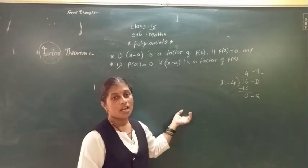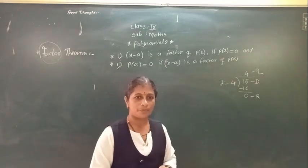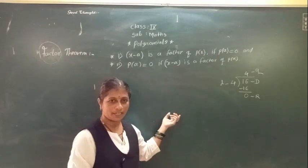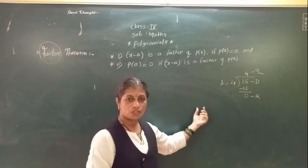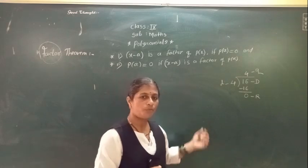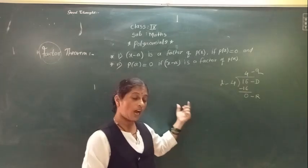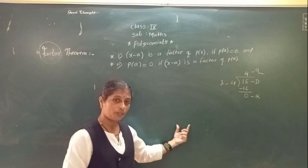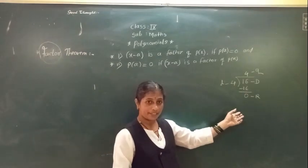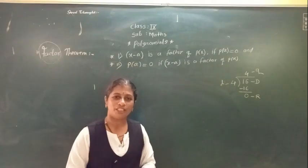So in the Factor Theorem, let P(x) be any polynomial with degree greater than or equal to 1, and let A be any real number. If X minus A is the factor of your given polynomial P(x), this is possible when P(A) equals 0. We find the value of X from X minus A equals 0, then substitute that X value into the given polynomial.